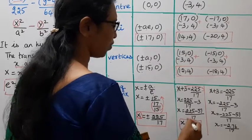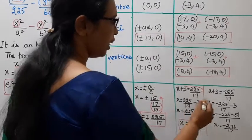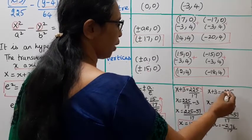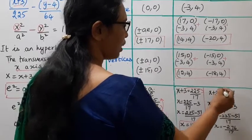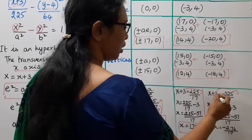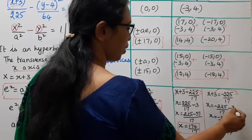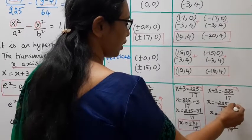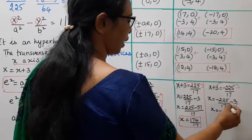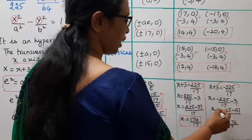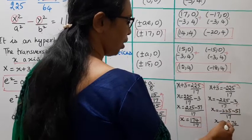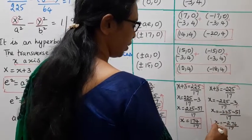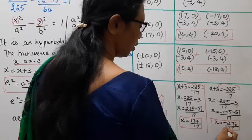For the second directrix: x+3 = -225/17, so x = -225/17 - 3 = -225/17 - 51/17 = -276/17. So the equation of the second directrix is x = -276/17.